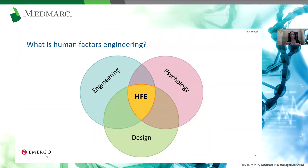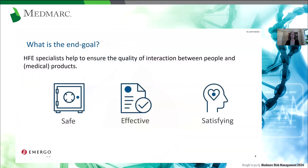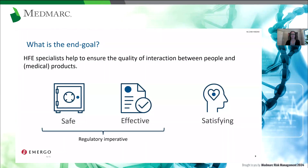Fundamentally, human factors sets out to make sure that there's a good match between people and products — we want to make sure that people can use products safely and effectively. That represents the regulatory imperative I mentioned. We also want to make sure that products can be used in a satisfying way.